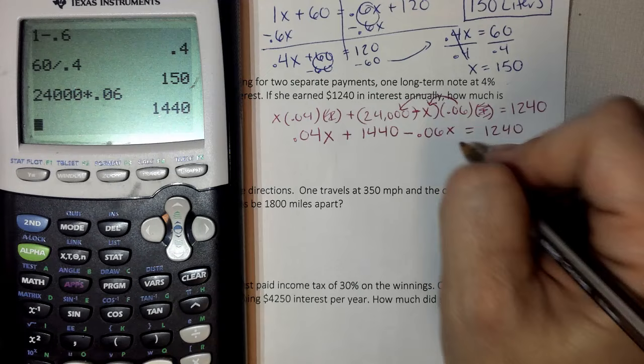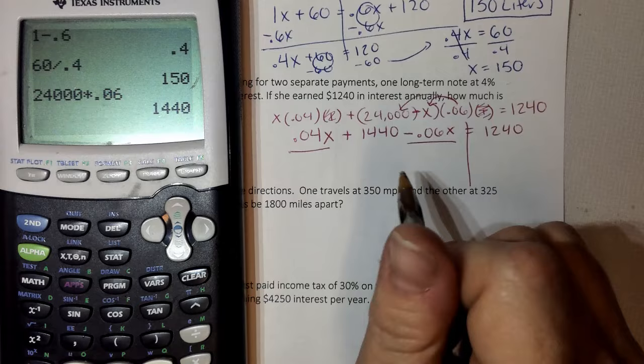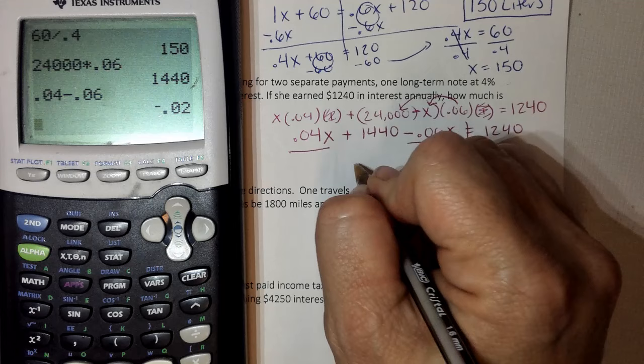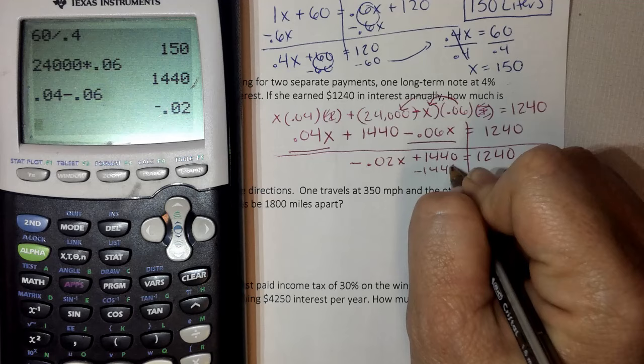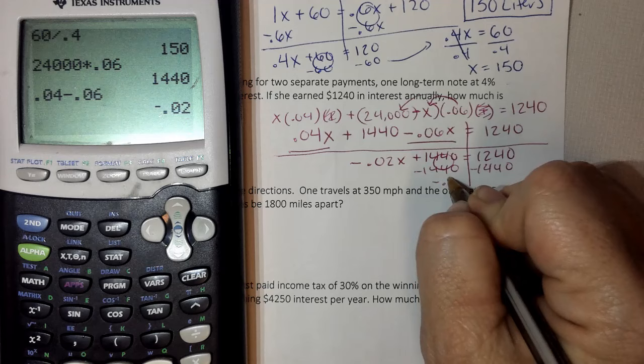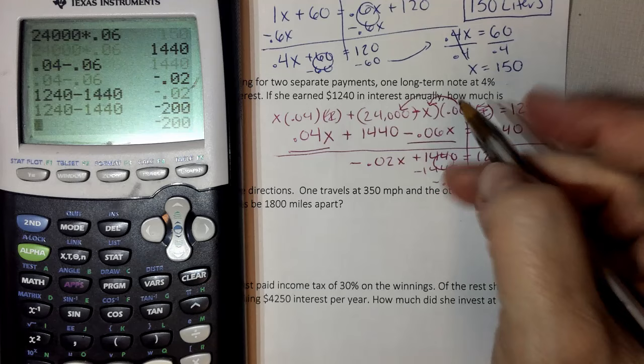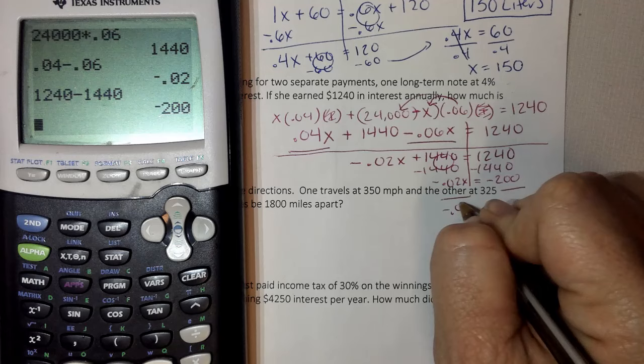And now I solve. So I know I have like terms. Do not do opposite signs. They are on the same side. 0.04 minus 0.06, so I get negative 0.02X plus 1,440 equals 1,240. Minus 1,440, minus 1,440. And I get negative 0.02X equals negative 200. And now I divide both sides by negative 0.02, and I get 10,000.